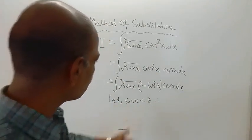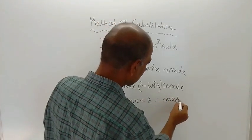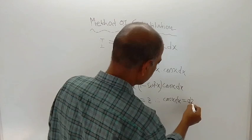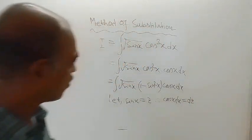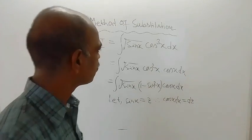On differentiation, what you will get? In the left-hand side, you will get cos x dx, and in the right-hand side we are getting dz. So this cos x dx will be replaced by dz.